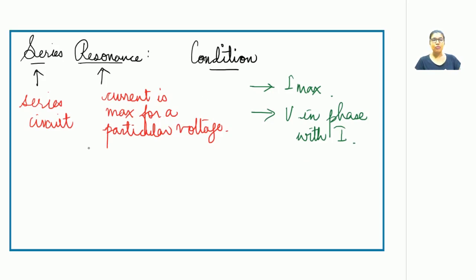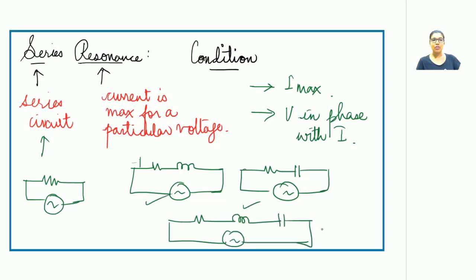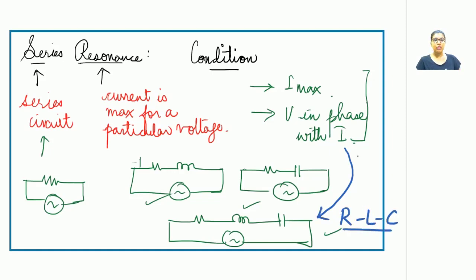A series circuit doesn't mean only the presence of a resistor. A series circuit should have a combination of R with L (RL circuit), or R in series with C (RC circuit), or the combination of all three — the RLC circuit. For a series circuit to behave under resonance, the current has to be maximum and the voltage should be in phase with the current. Only the RLC circuit can satisfy both conditions and come under series resonance.